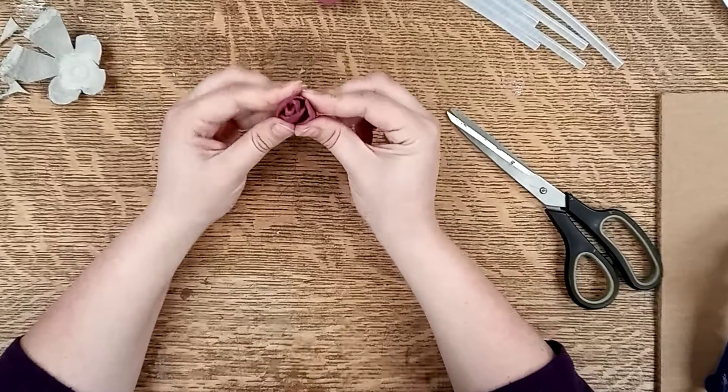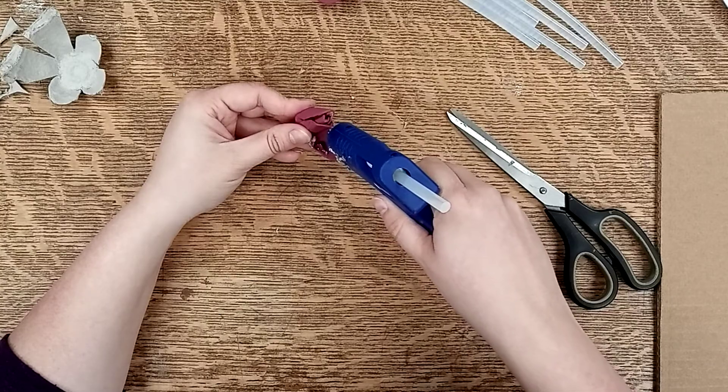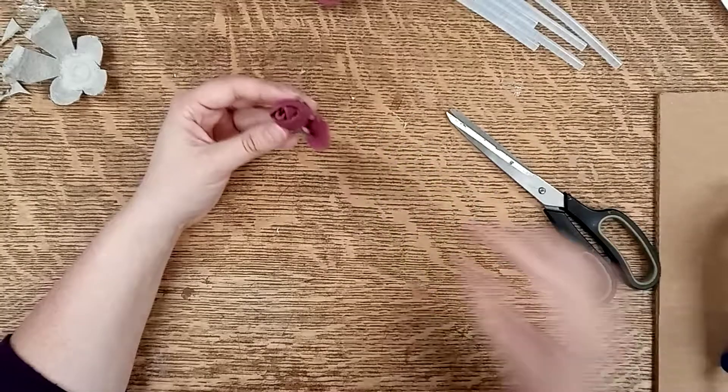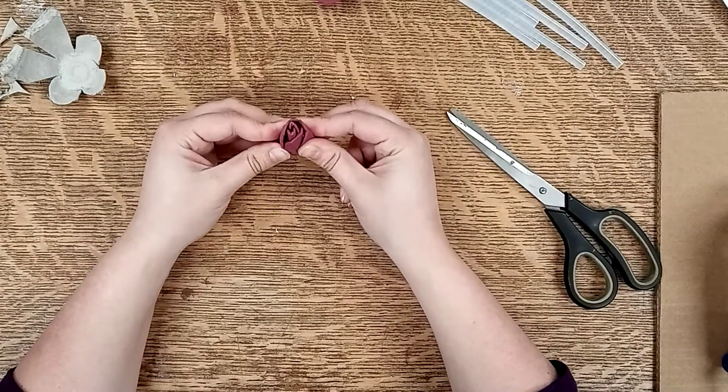And then you do the last one. Again you put the glue in the middle and stick it to the outside and there's the center of your rosebud.